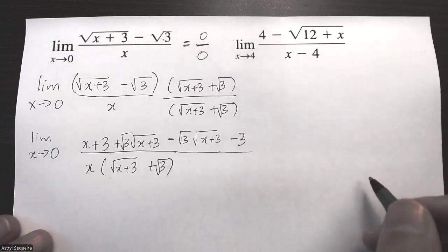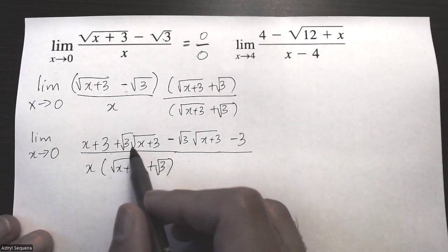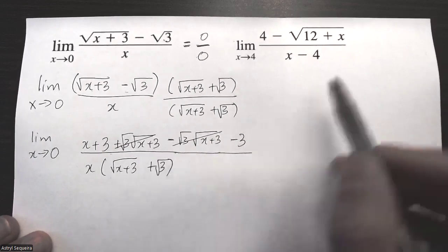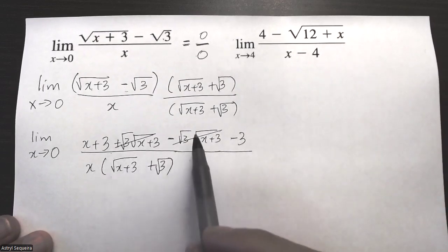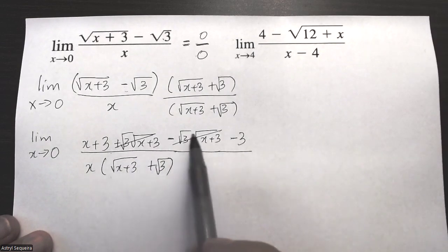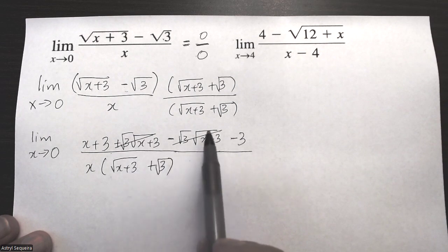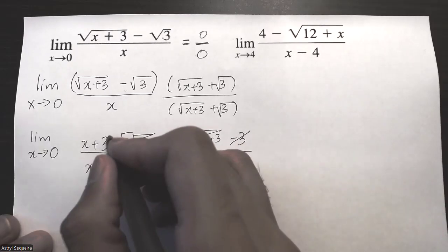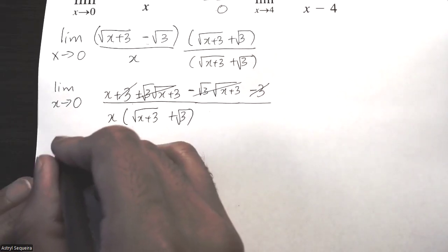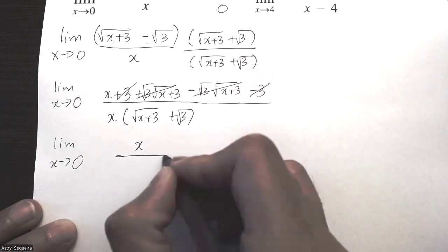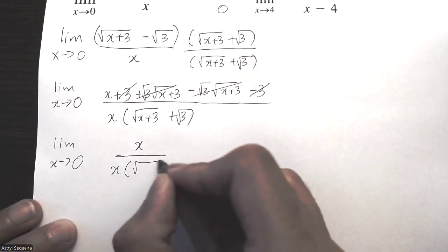Multiplying the two outside terms, negative root three times positive root three is just negative three. Now these two middle terms cancel out, and when we do these rationalizing questions the middle terms will always cancel out — so in the later examples I won't write the middle terms anymore because they always cancel. Positive three and negative three also cancel, so I'm just left with limit as x approaches zero with only an x on the top.